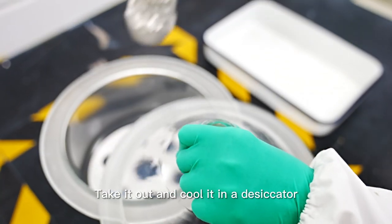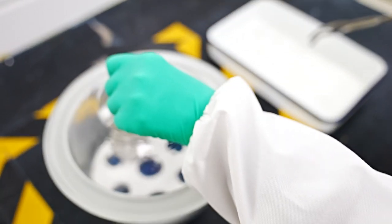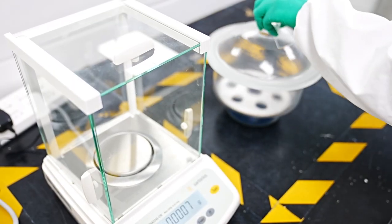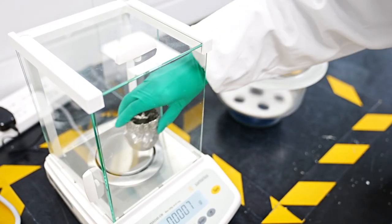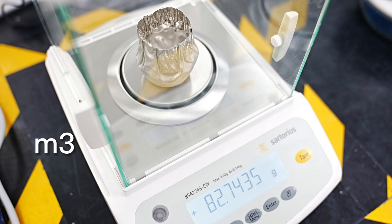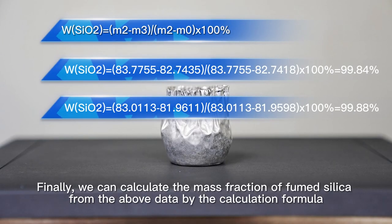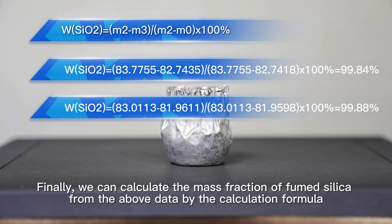Take it out and cool it in a desiccator. Weigh it M3. Finally, we can calculate the mass fraction of fumed silica from the above data by the calculation formula.